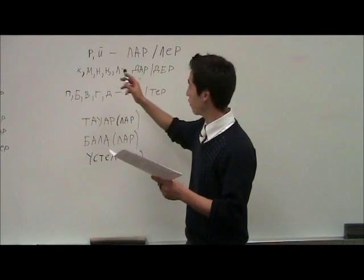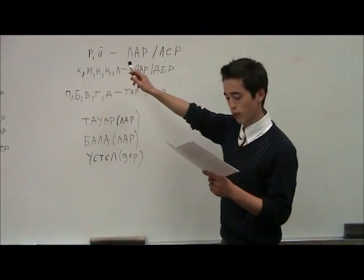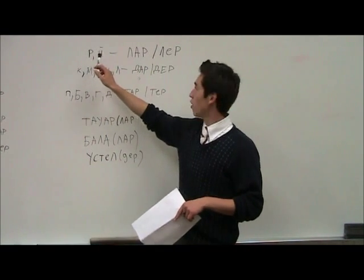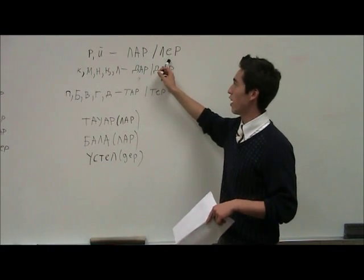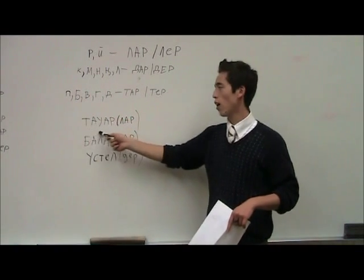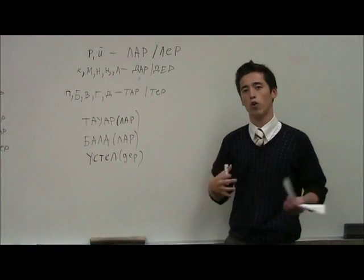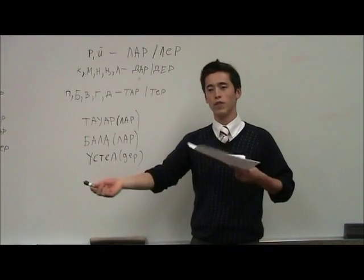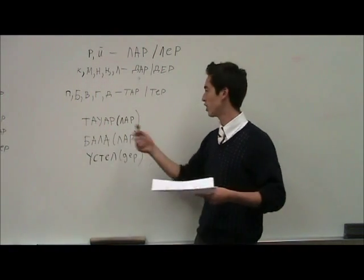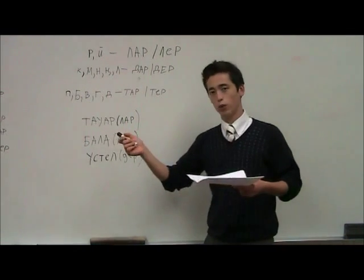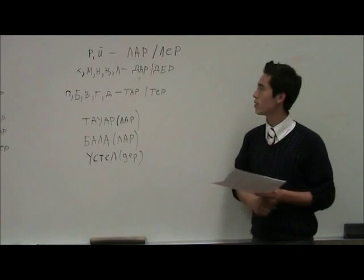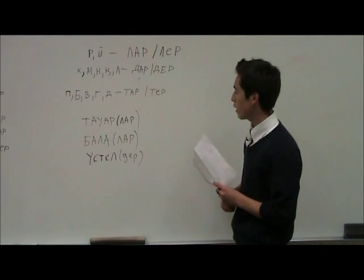So if there are vowels and consonants like r, we add lar or ler. Let's give an example. For example, the word 'tawar'. Tawar is like a product, or the things you sell. Tawar is one product. If you say 'tawarlar', it will be like products.